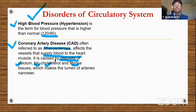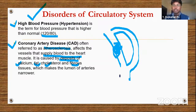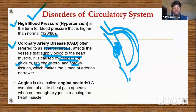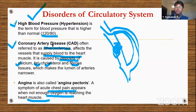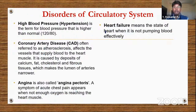Coronary angioplasty is done for coronary artery disease. If a vessel is blocked by deposits, bypass surgery creates another route for blood to flow. Angina, also called angina pectoris, is a symptom of acute chest pain that appears when not enough oxygen reaches the heart muscle — this occurs due to coronary artery disease reducing blood circulation.